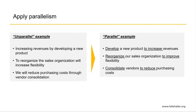Another tactic to improve the effectiveness of your bullet points is to write them in parallel form. Parallel form means the grammatical structure of each sentence should be similar. In the right-hand side example, the three bullets are written in parallel form — each sentence starts with a verb and ends with a result: 'Develop a new product to increase revenues,' 'Reorganize our sales organization to improve flexibility,' 'Consolidate vendors to reduce purchasing costs.' Writing in parallel form looks more professional, consistent, and impactful, and makes it easier to communicate your points.